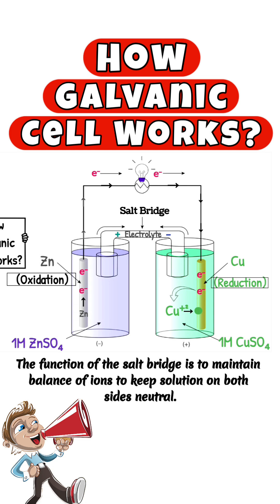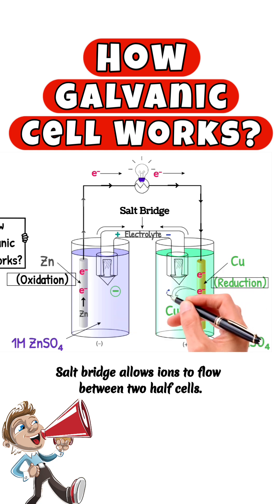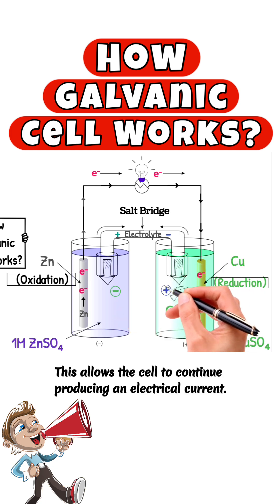The function of the salt bridge is to maintain balance of ions to keep solutions on both sides neutral. Salt bridge allows ions to flow between two half cells. This allows the cell to continue producing an electrical current.